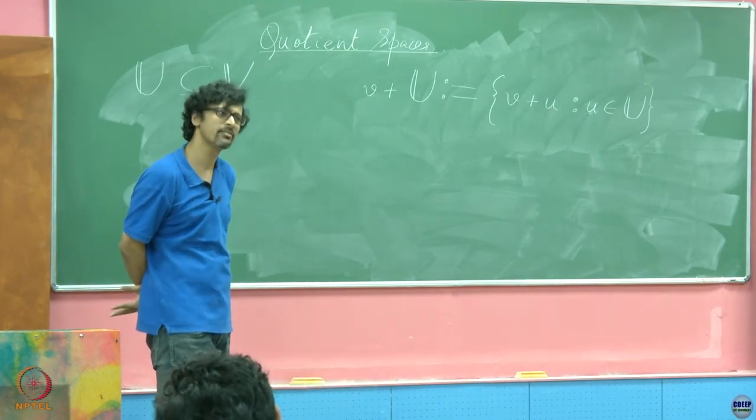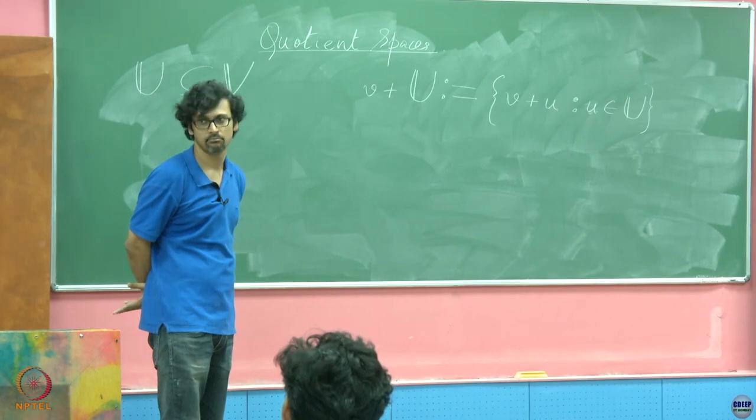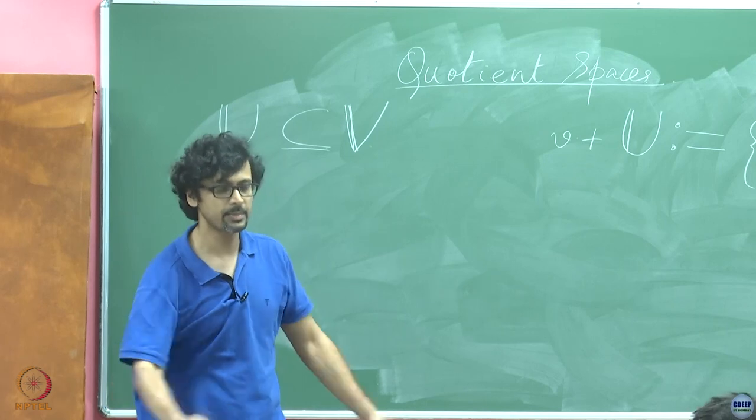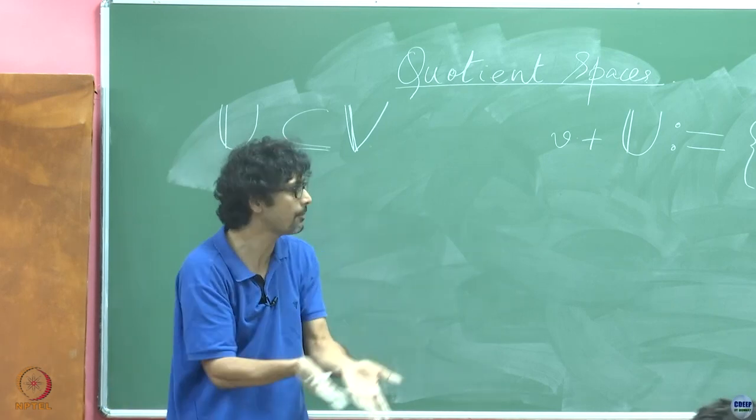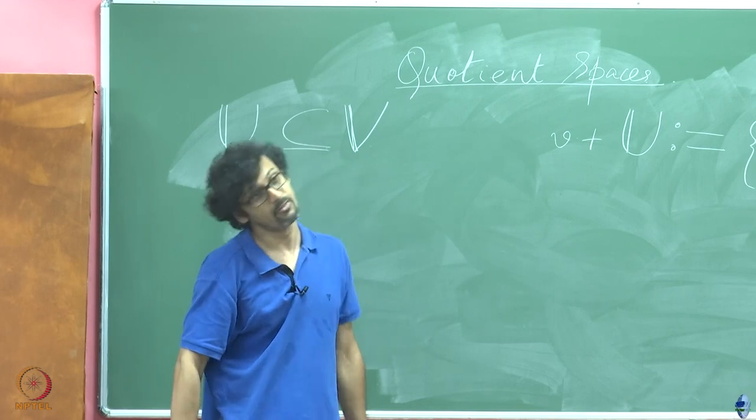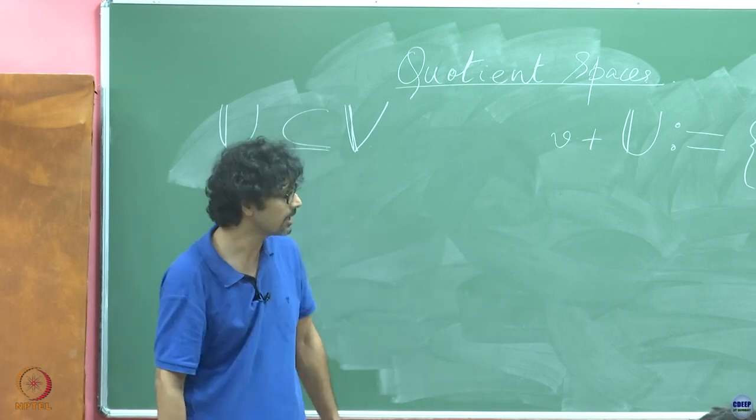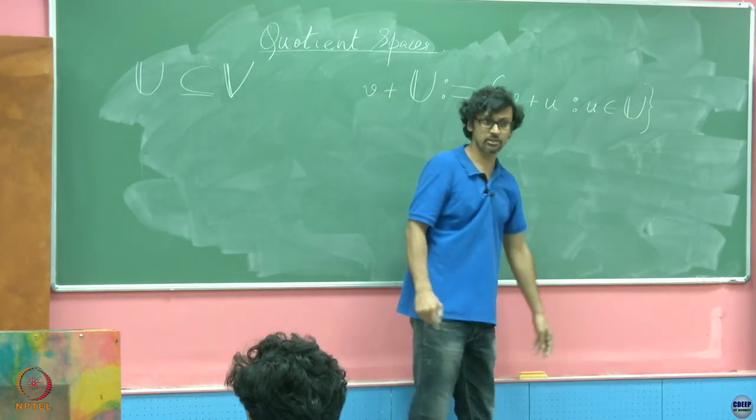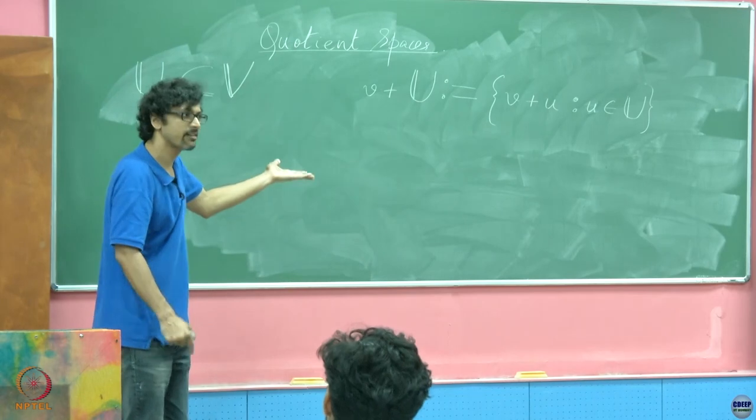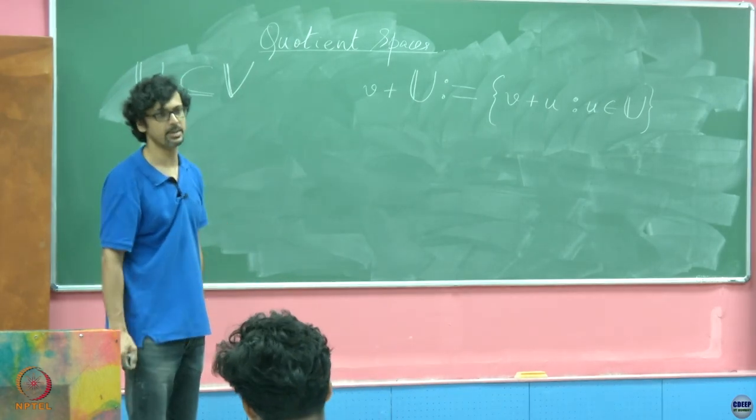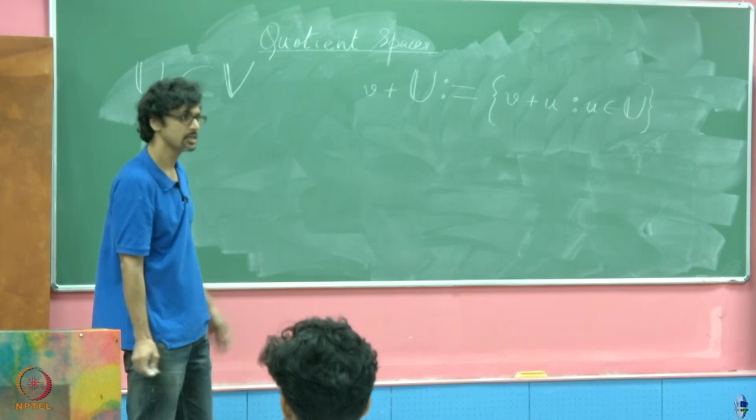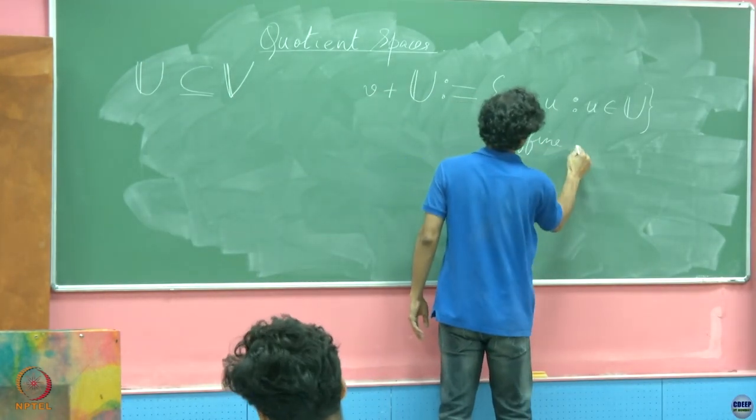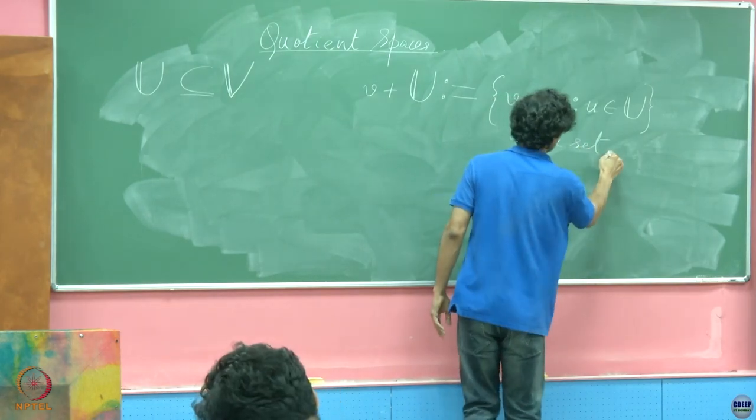So what is basically being talked about here? What sort of a thing is this? First of all, is this a vector space? Unless V is 0, of course not. Because this is basically shifted versions of that subspace U. V can belong to U. But if it is in general not so, then this is not a vector space. What is this at best? It is a set exactly as it looks. In fact, it is called an affine set.